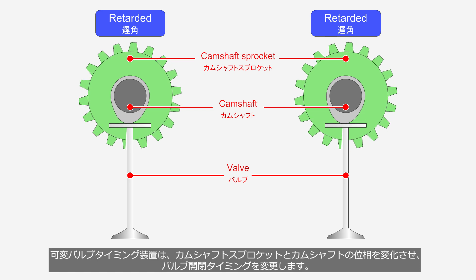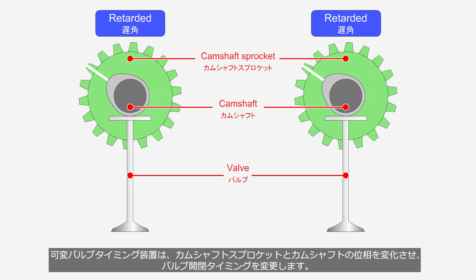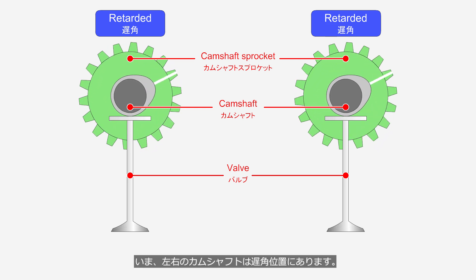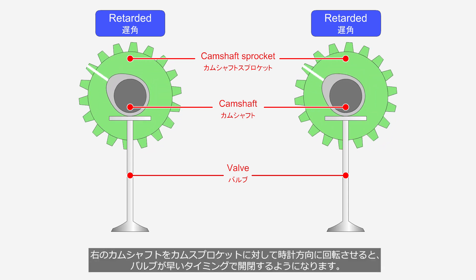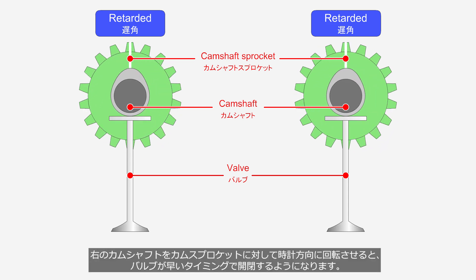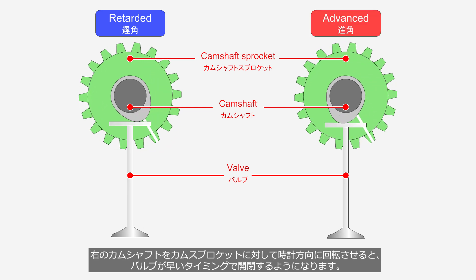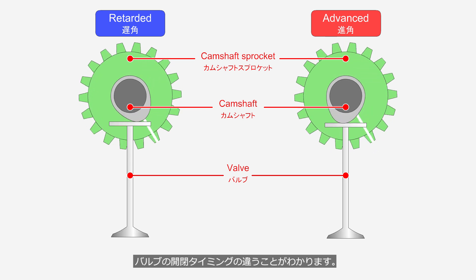The variable valve timing system changes the valve opening and closing timing by altering the phase between the camshaft sprocket and the camshaft. Currently, the left and right camshafts are in a retarded position. Rotating the right camshaft clockwise relative to the camshaft sprocket will cause the valves to open and close earlier. You can see that the valve opening and closing timings are different.